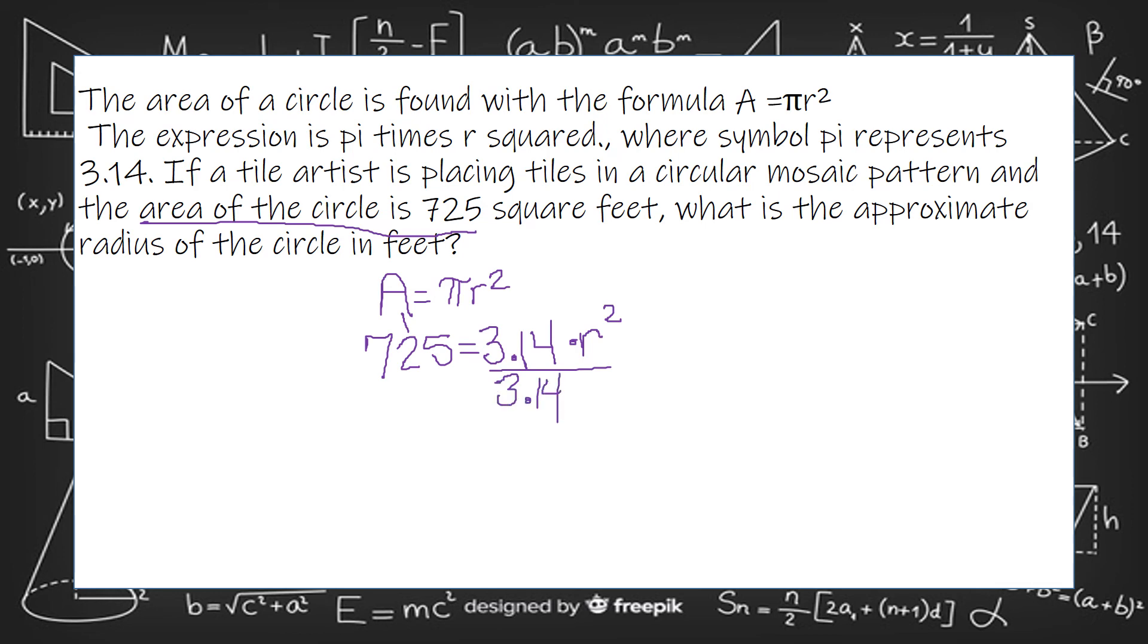So now I've got to get the r by itself. So the 3.14, or pi, is being multiplied by the r squared. So to undo that, I've got to do the opposite or the inverse of multiplication. The inverse of multiplication is division. So I'm going to divide by 3.14.